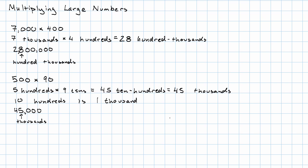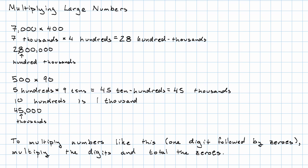Obviously going to the nouns is not the easiest way to do this. To multiply numbers like this that consist of one digit followed by a bunch of zeros, we multiply the digits and then we total the zeros. So we had 7 times 4 is 28, 3 zeros plus 2 zeros is 5 zeros. 5 times 9 is 45, 2 zeros plus 1 zero is 3 zeros.